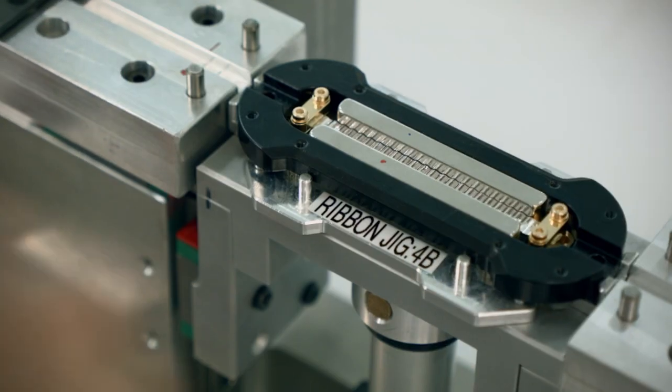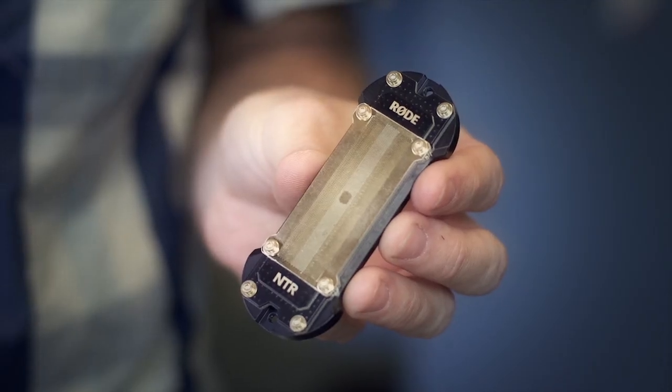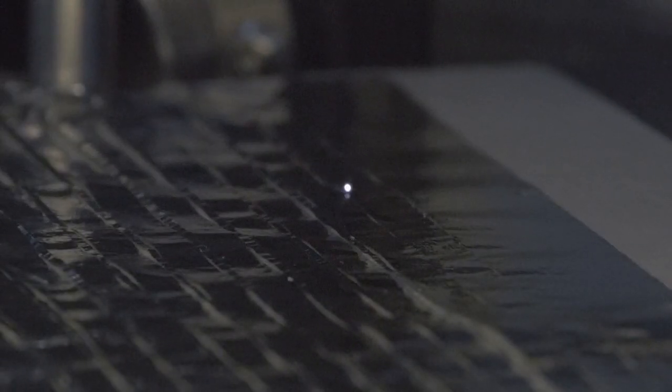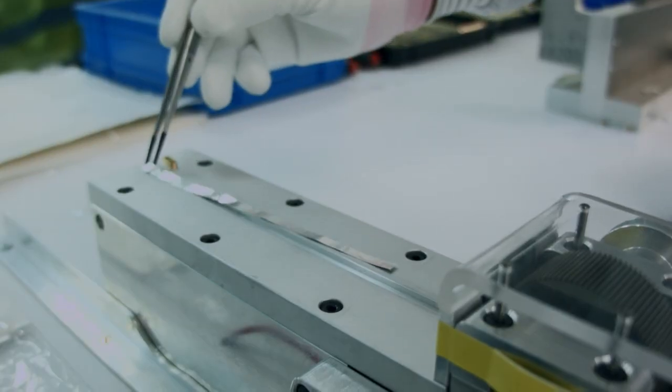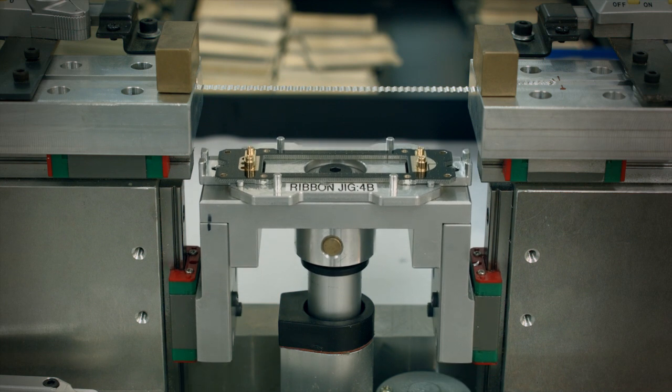Here we are going to show you the assembly process for the ribbon of the Rode NTR. We start by laser cutting an extremely thin 1.8 micron aluminum foil. Laser cutting allows us to keep extremely tight tolerances and ensures consistency in the ribbon element every time.